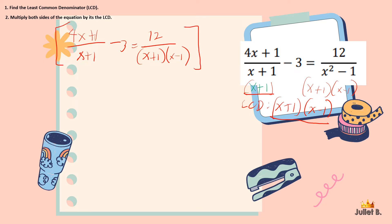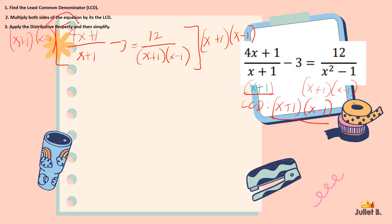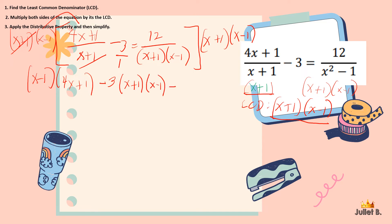Step 2: multiply both sides by the LCD, x plus 1 times x minus 1. Applying the distributive property, x plus 1 cancels in the first term, leaving x minus 1 times 4x plus 1. For the second term, we multiply negative 3 times x plus 1 times x minus 1. On the right side, x plus 1 and x minus 1 cancel, leaving 12.